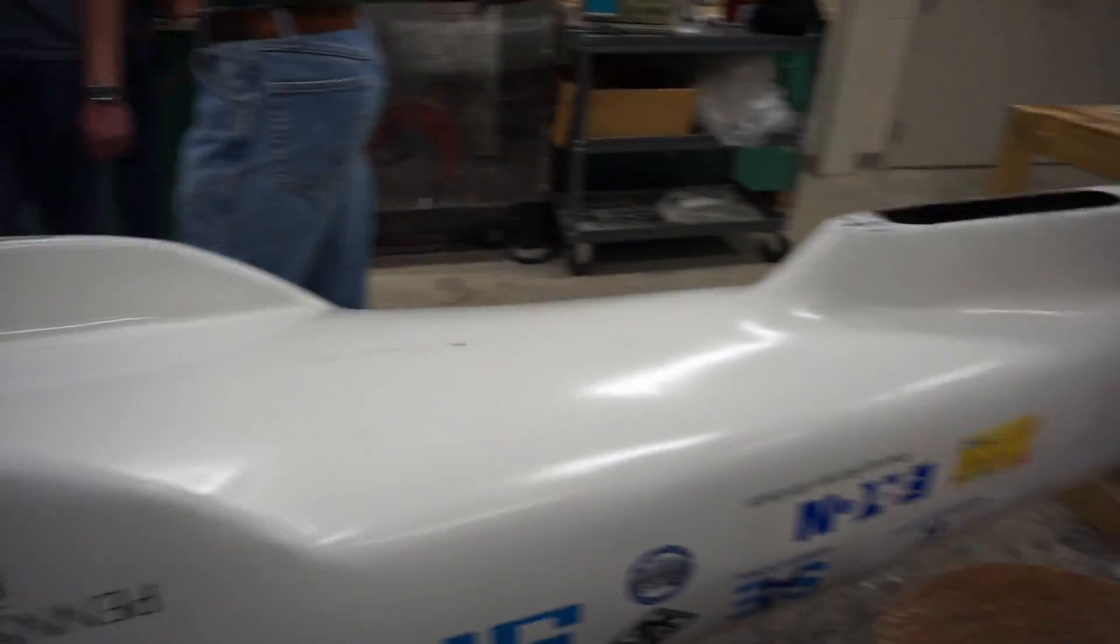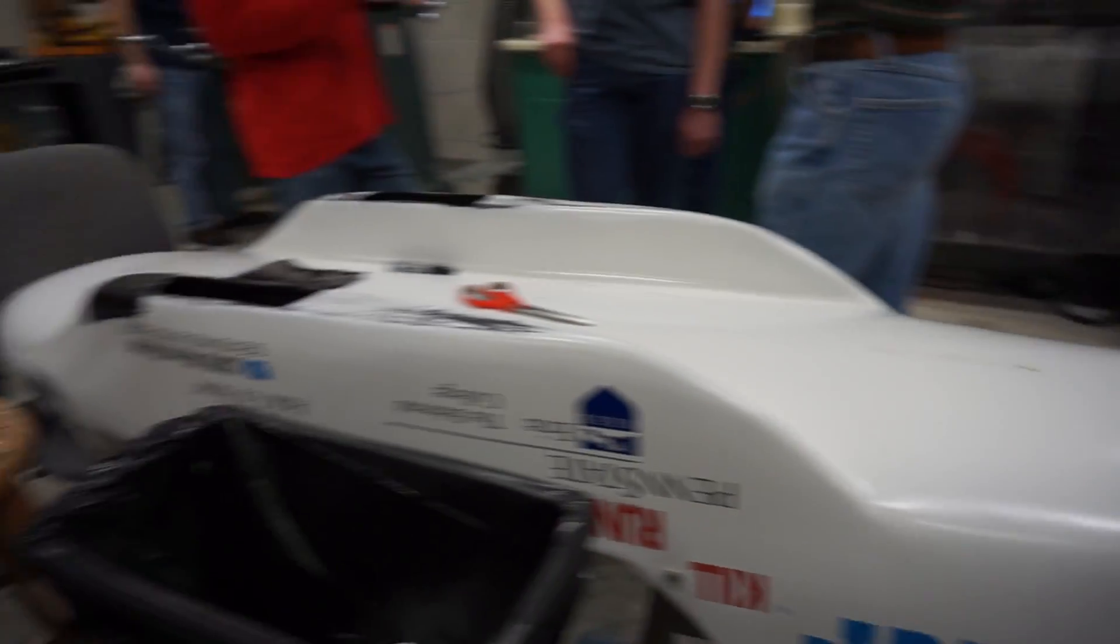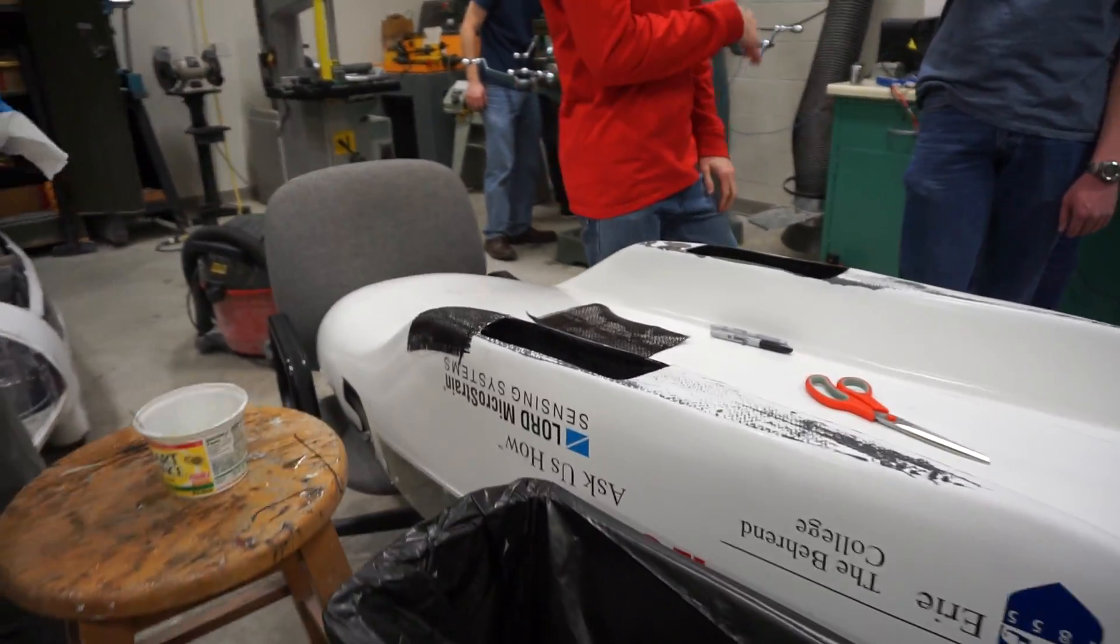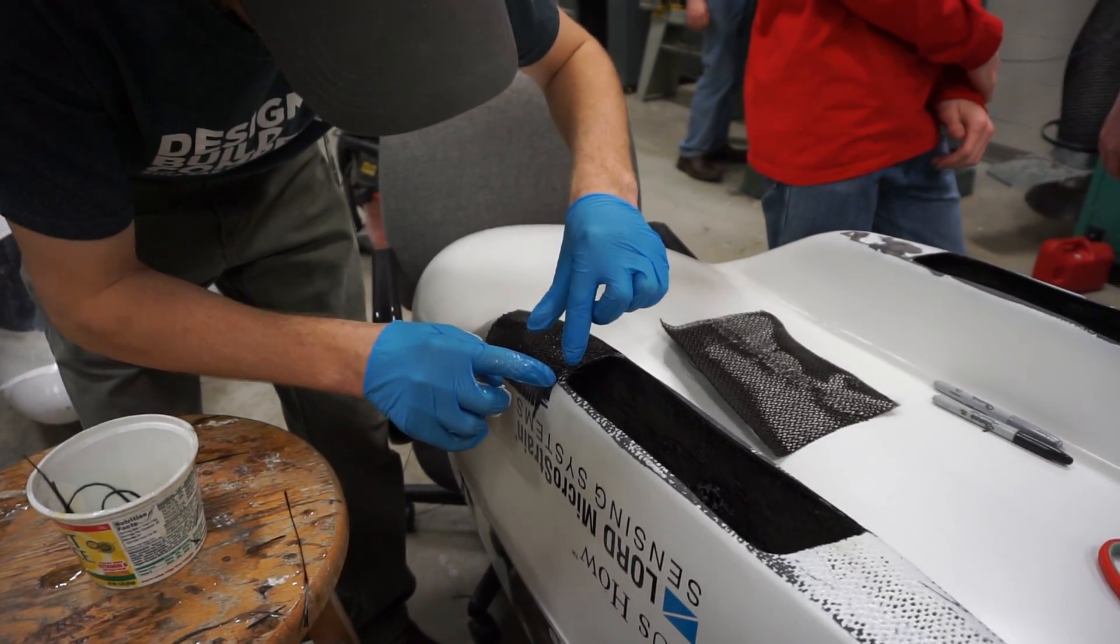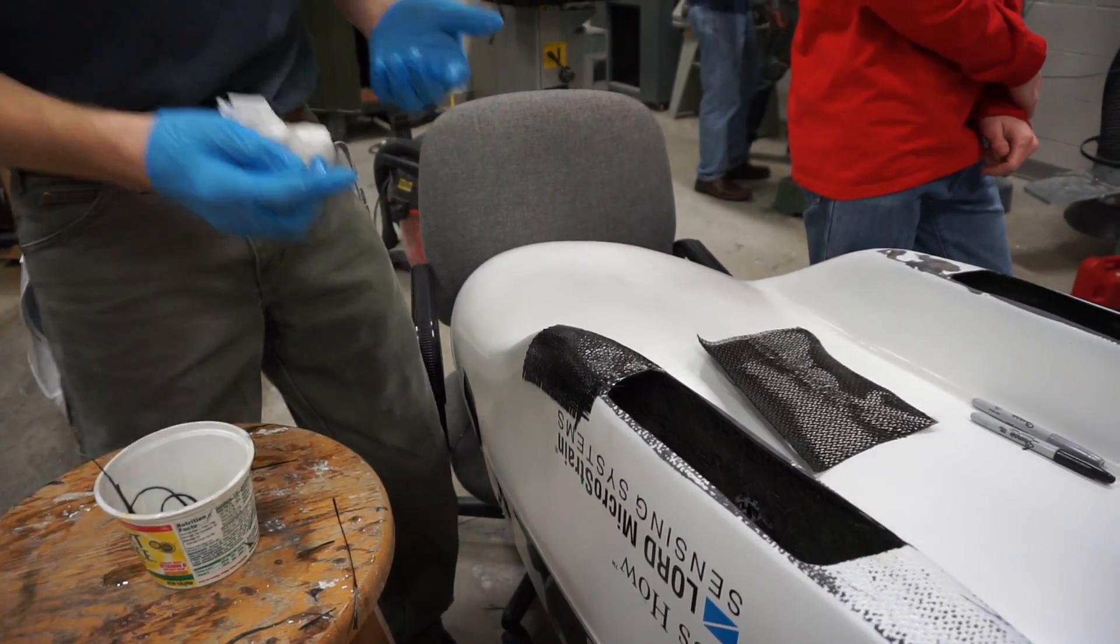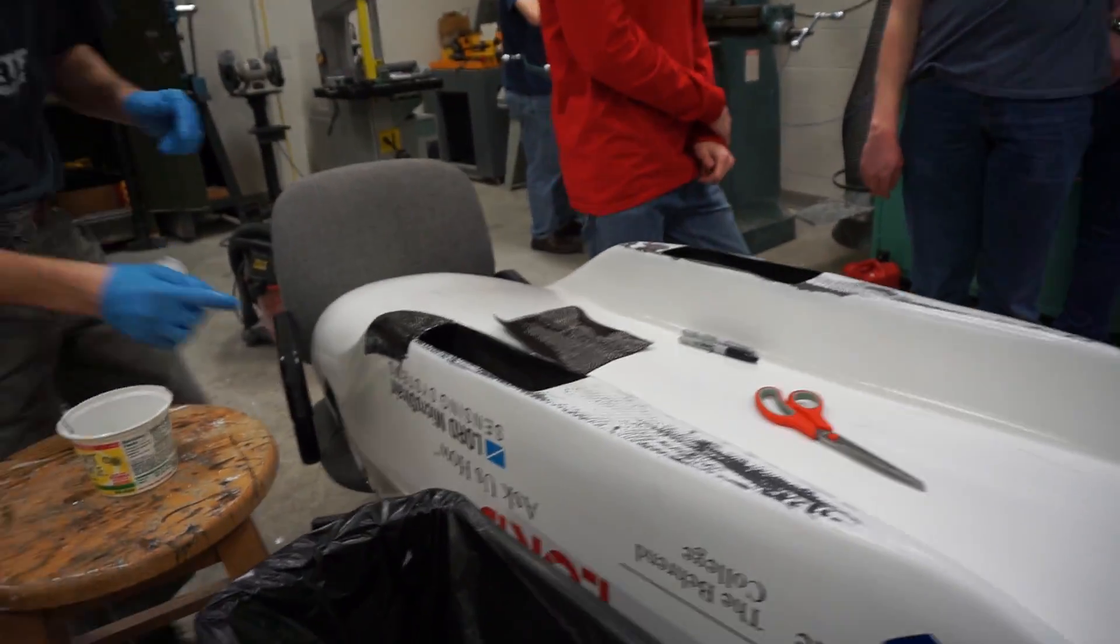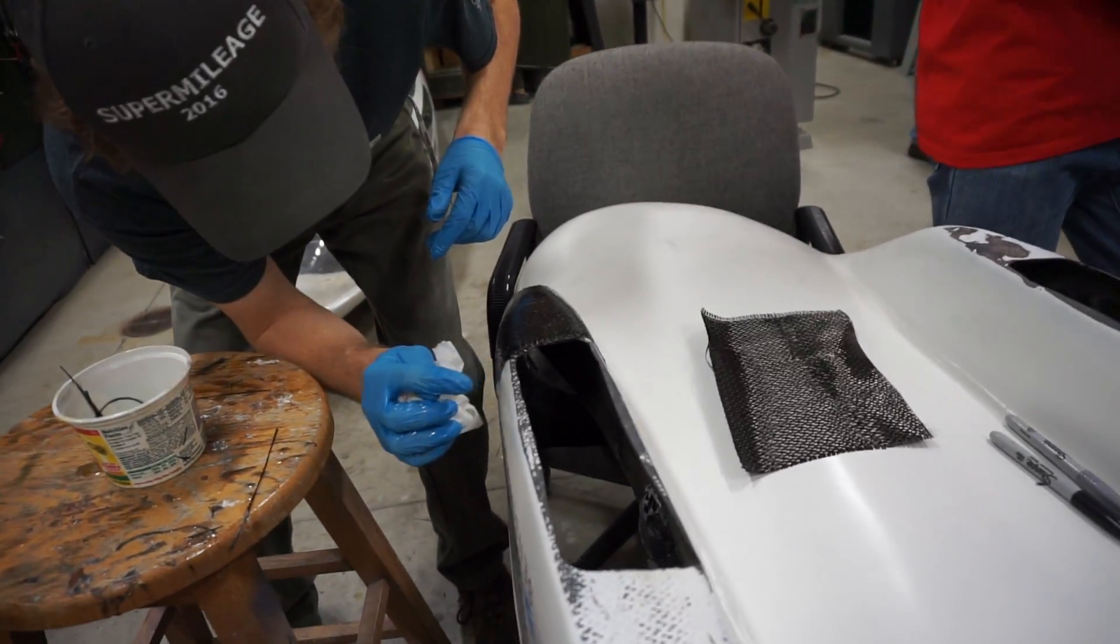So when did the Super Mileage Club build this body? This body was built beginning September of 2015. Okay, so it's been in two races then? Or one race? Just one. Just one race? This year we'll be in the second race this year.